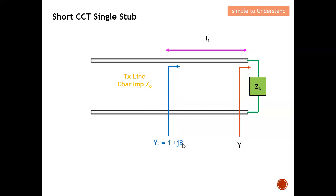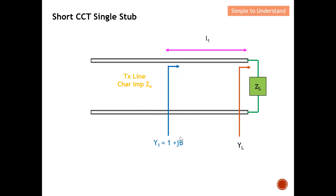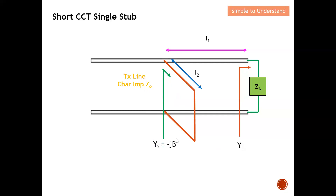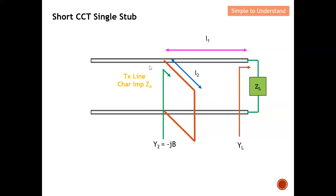So if we can remove the imaginary term +jB, we achieve impedance matching. To do this, I introduce a short-circuit stub with an admittance effect of −jB. Once the stub contributes −jB, the imaginary component is cancelled, and what remains when looking into the combined network is purely real — impedance matching is successfully achieved. Thank you so much for your strong support — please like and subscribe, and I hope to see you guys soon.